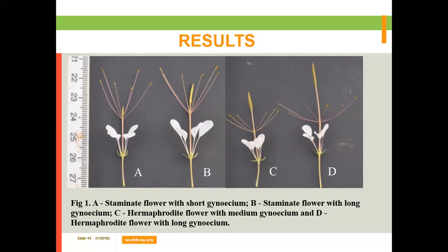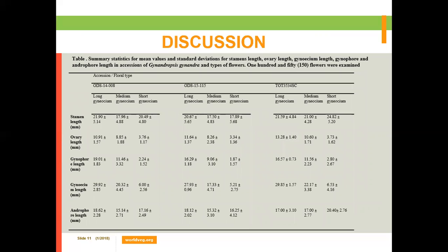As a result, we observed two types of flowers in all three accessions: staminate flowers and hermaphrodite flowers. Among the staminate flowers, we found two types — staminate flower with short gynecium and staminate flower with long gynecium. Overall, we classified flowers into three types using the length of the gynecium: long gynecium, medium gynecium, and short gynecium.